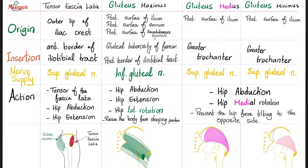Gluteus maximus originates from the posterior surface of the ilium, posterior surface of the sacrum, and posterior surface of the sacrotuberous ligament. It inserts into the gluteal tuberosity of the femur and the posterior border of the iliotibial tract. Its functions are hip extension and hip lateral rotation — getting the insertion close to the origin pulls the femur and rotates the hip laterally.